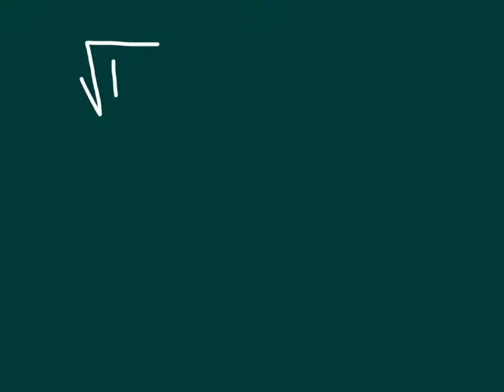This symbol represents the square root. What it means is that any time you have that symbol and a number on the inside, it's looking for what number you can multiply by itself to get the number on the inside. In this case, that would be 4, because 4 times 4 is 16.